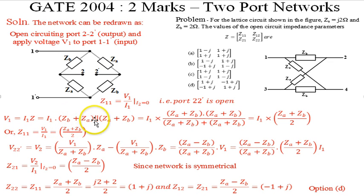This would be Z_B plus Z_A in parallel Z_A plus Z_B. There is a parallel combination. So this would be I1 into (Z_A + Z_B)(Z_A + Z_B) divided by (Z_A + Z_B + Z_A + Z_B). This simplifies to I1 into (Z_A + Z_B) divided by 2, or we can write here Z11 equals V1 over I1, that is (Z_A + Z_B) divided by 2. This is the value for Z11.